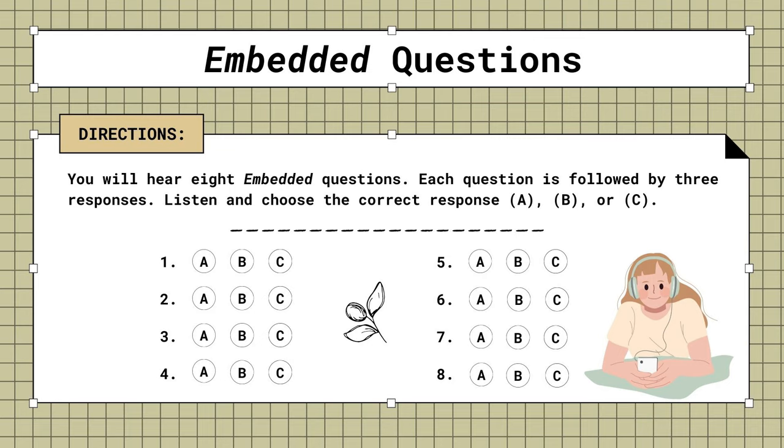4. Do you know if they're taking the train? A. I'm very glad you came. B. It's quicker by train. C. Yes, they're at the station now.